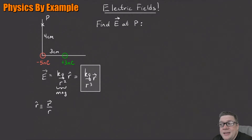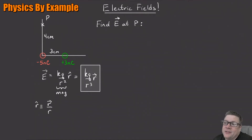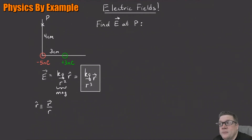You might think kq/r³ · r⃗ looks a little more complicated because there's now a cube in the denominator, but I don't really care — if I'm squaring something I can cube it just as well, it's just a different button on the calculator. The advantage is that r⃗ is something we can usually just read off from the problem statement. Here's why I like to do it this way.